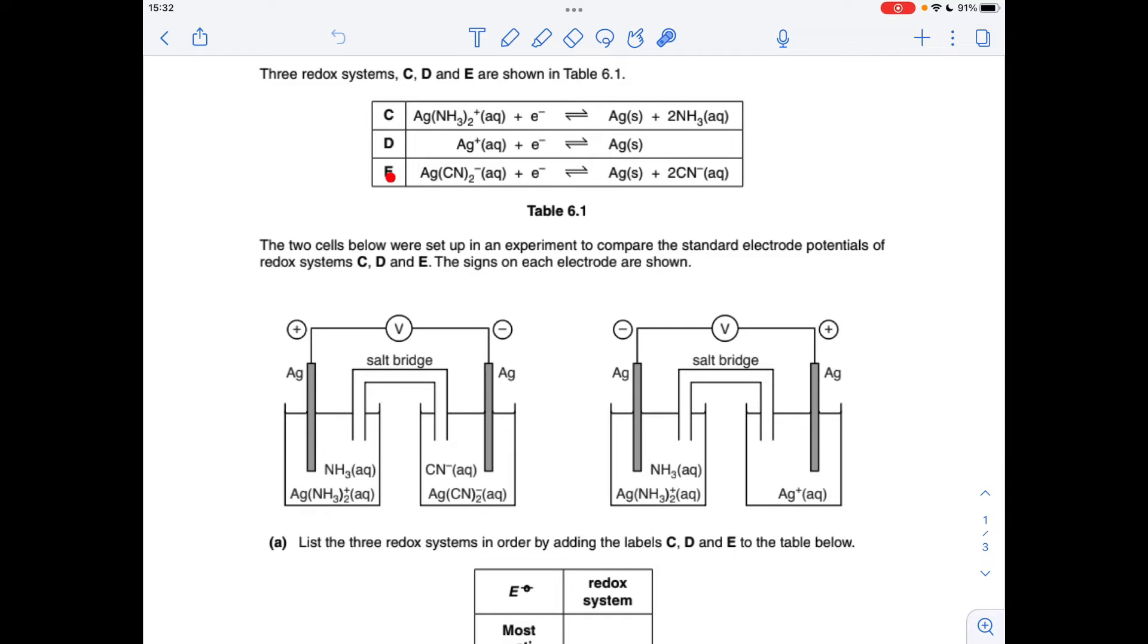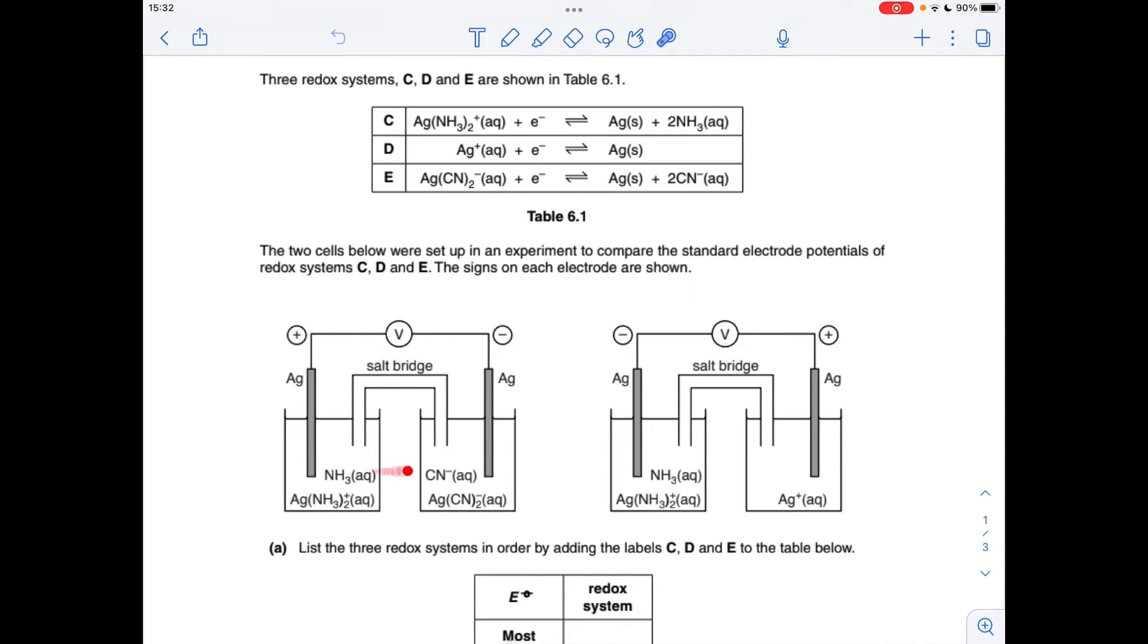So we've got these three systems, C, D and E, and from the information here we've got to establish the order of the standard electrode potentials. So starting with the left-hand one, the giveaway here is the sign of each electrode.